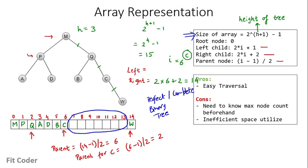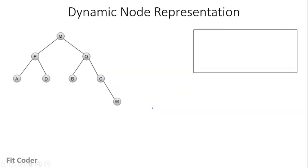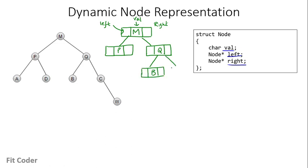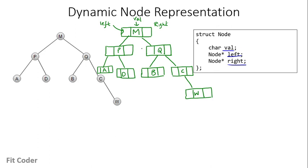The second form of representation is linked list or dynamic representation. For each node we define a structure comprising the value, a left pointer, and a right pointer. The M node is split into three parts: val, left, and right. The left pointer points to node P, which also has three parts, and the right pointer points to Q. Q in turn points to B on the left and C on the right, and C points to W.